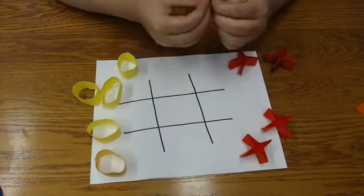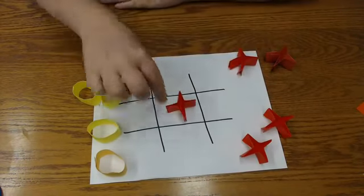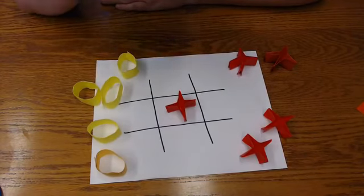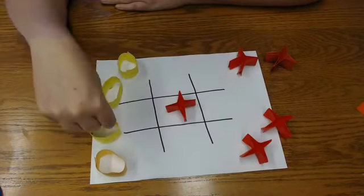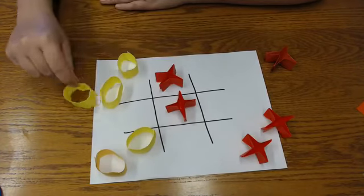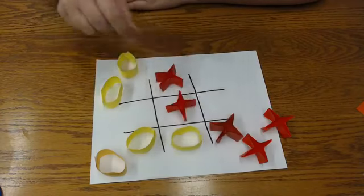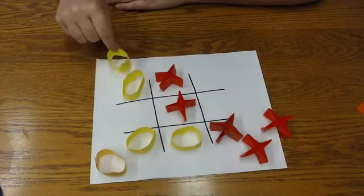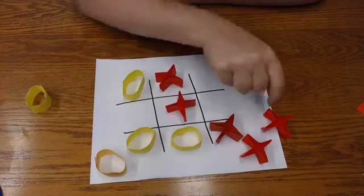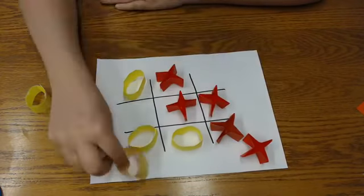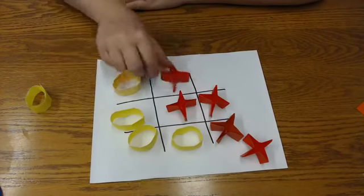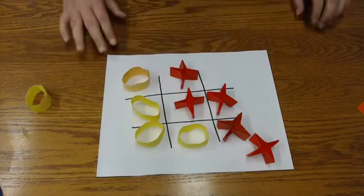I'm going to start with X. I always like to start with X, and I always like to start with the middle square. Whatever your strategy is, everybody has their own way to play. There's X, O, X. Oh, there we go. O, X, O. Oh my goodness. Oh my gosh, it's down to the wire here. X. Oh, oh no. Oh, look. O won. Congratulations. Oh, nice work.